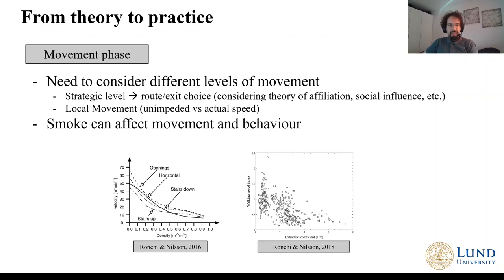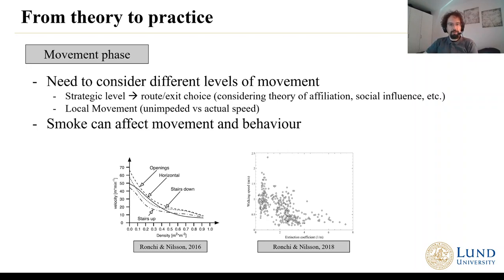Similarly, in the movement phase, we can consider different levels of movement: starting from the strategic level — where people will go, what route they will pick to reach their destination, and how this is affected by factors like affiliation and social influence. Then also how local movement works — how people interact in the crowd, what is the actual speed they might have in correspondence to the level of density and how many people they are surrounded by, and whether there is the presence of smoke, which is another factor that can have quite an impact on their behaviour.